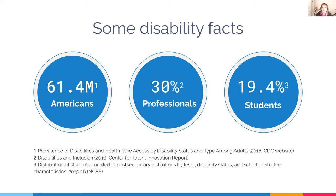Here's some disability data. According to CDC 2016 data, about 61.4 million Americans report that they have some sort of disability. According to the Center for Talent Innovation Report in 2016, about 30% of professionals said they have some sort of disability. It's quite a lot more prevalent than we think, and a lot of those disabilities are the kind we can't even tell people are experiencing.